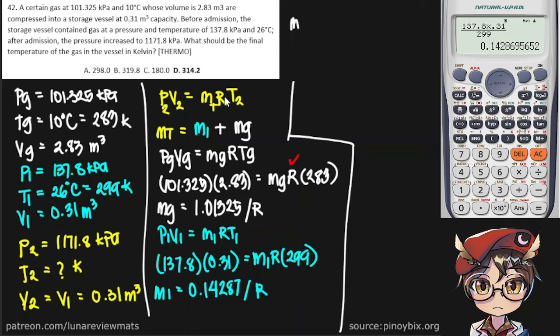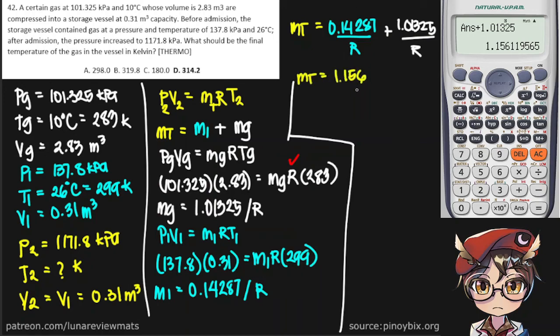So we can get our total mass now. Simply add these two together, and that adds up to 1.156.